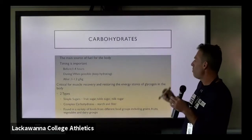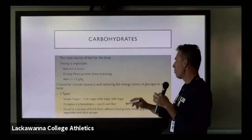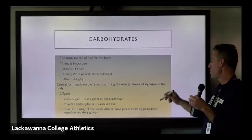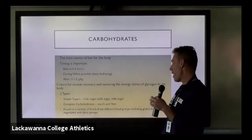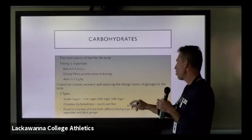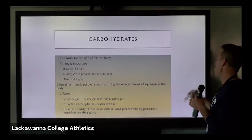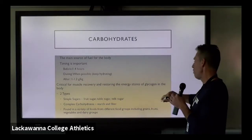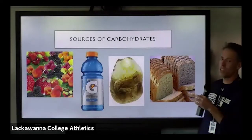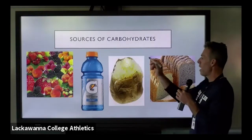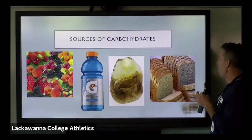There are two types of carbohydrates. We have our simple sugars, found in fruits, table sugar, and milk sugar. We have our complex carbohydrates — starch and fiber — found in a variety of food groups including grains, fruits, vegetables, and dairy groups. Some examples of carbs: fruits, Gatorade, a baked potato, and breads.